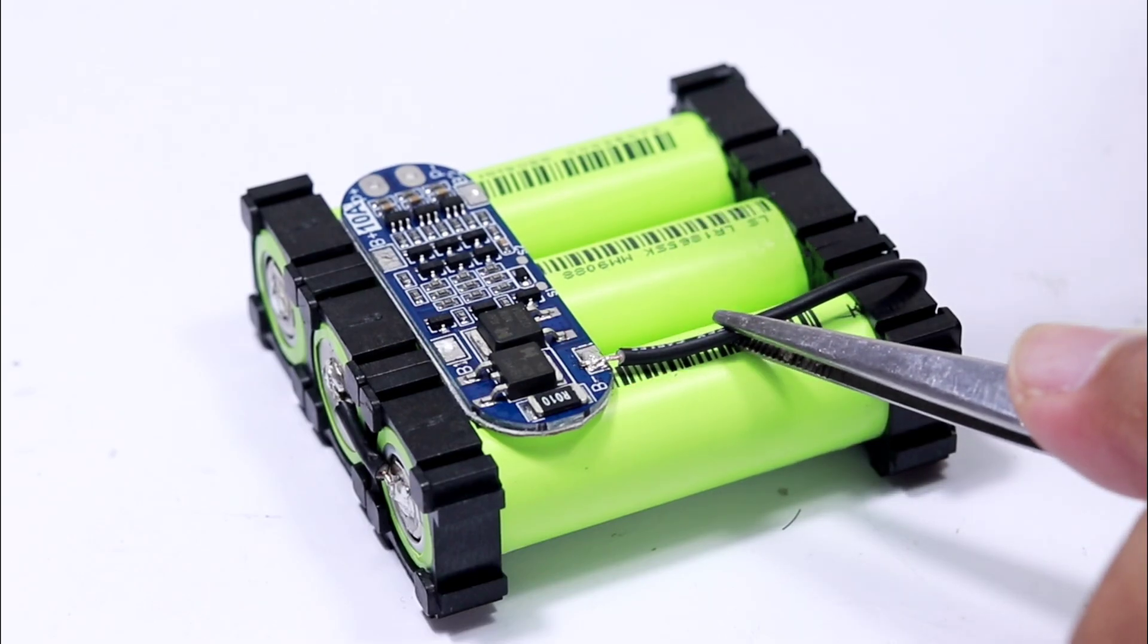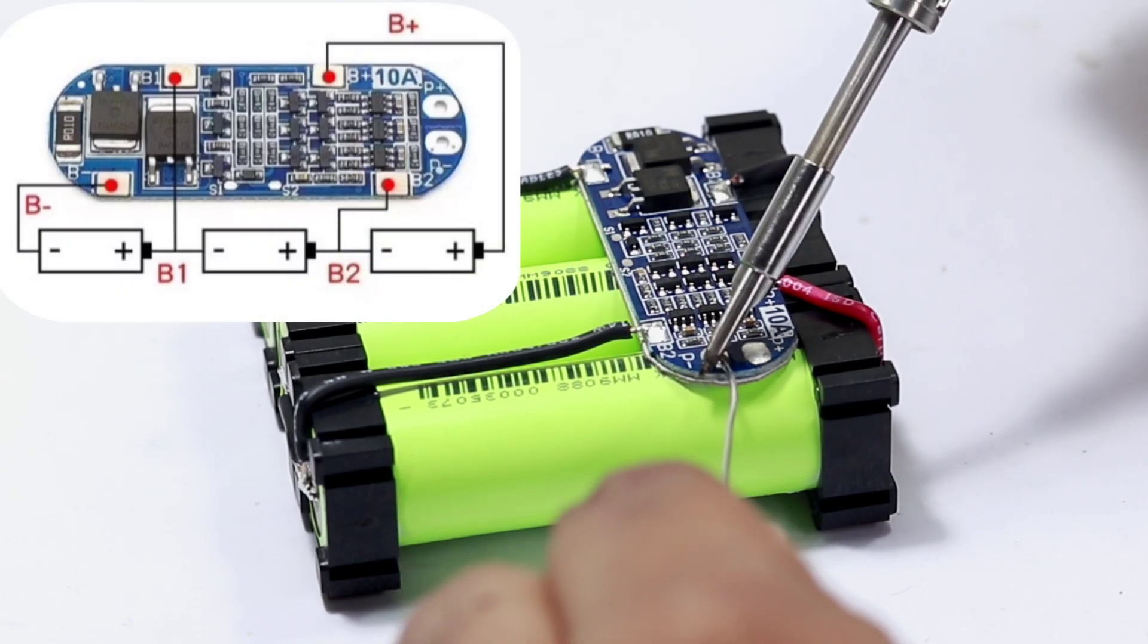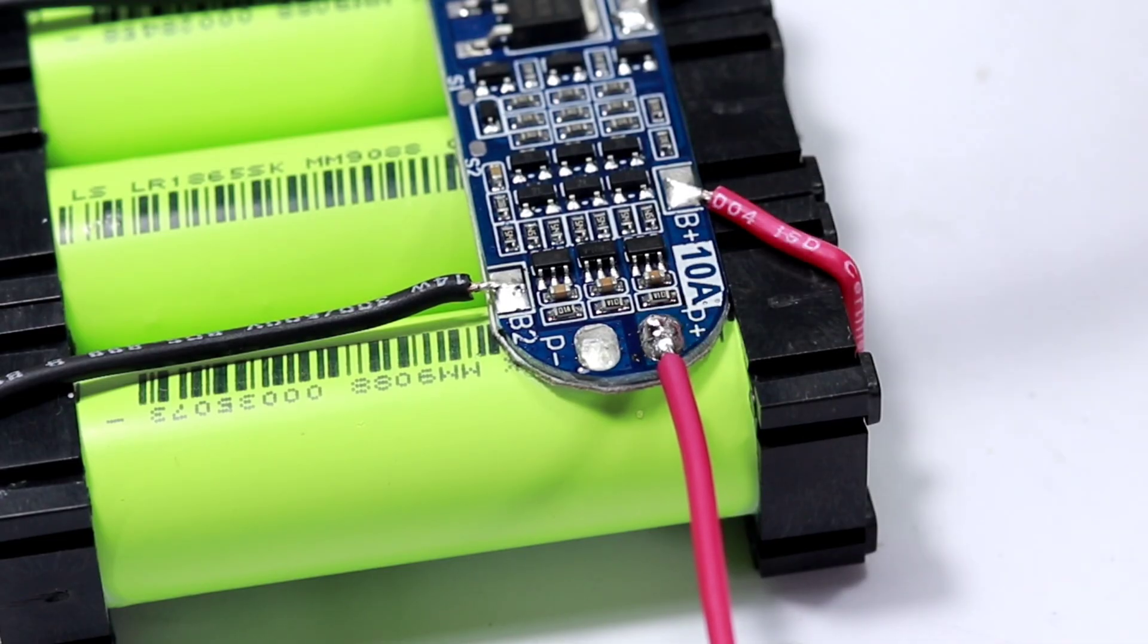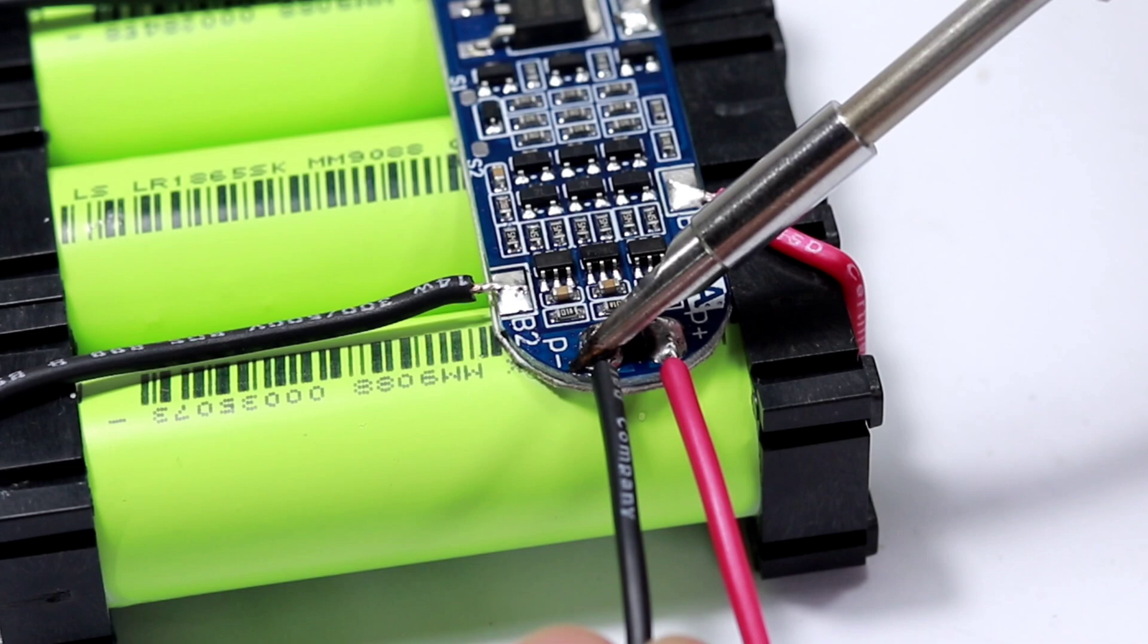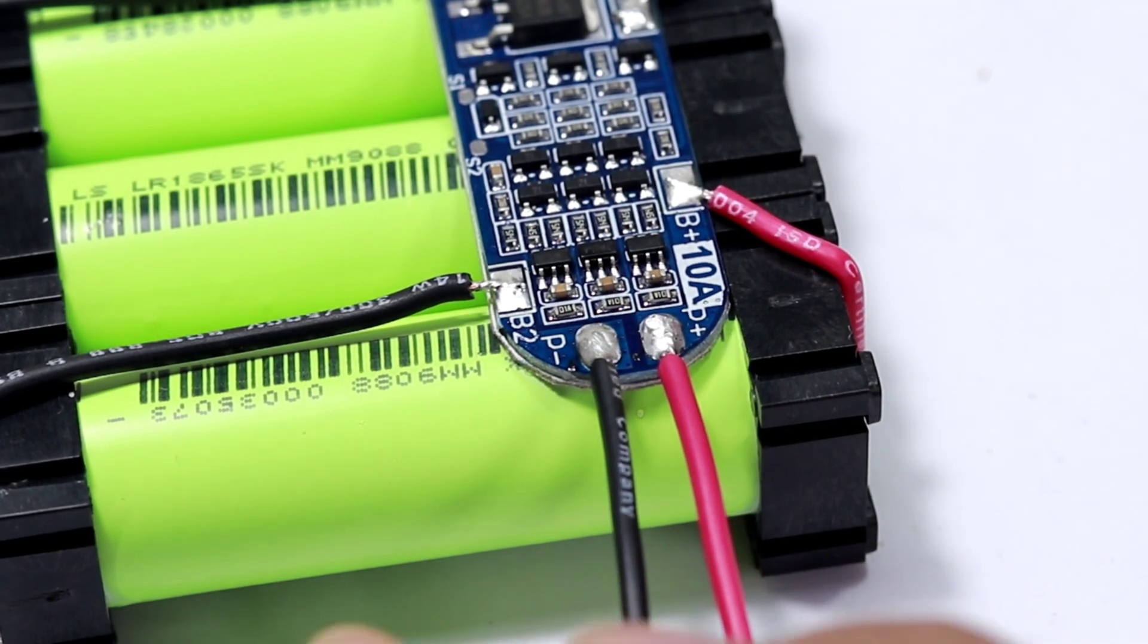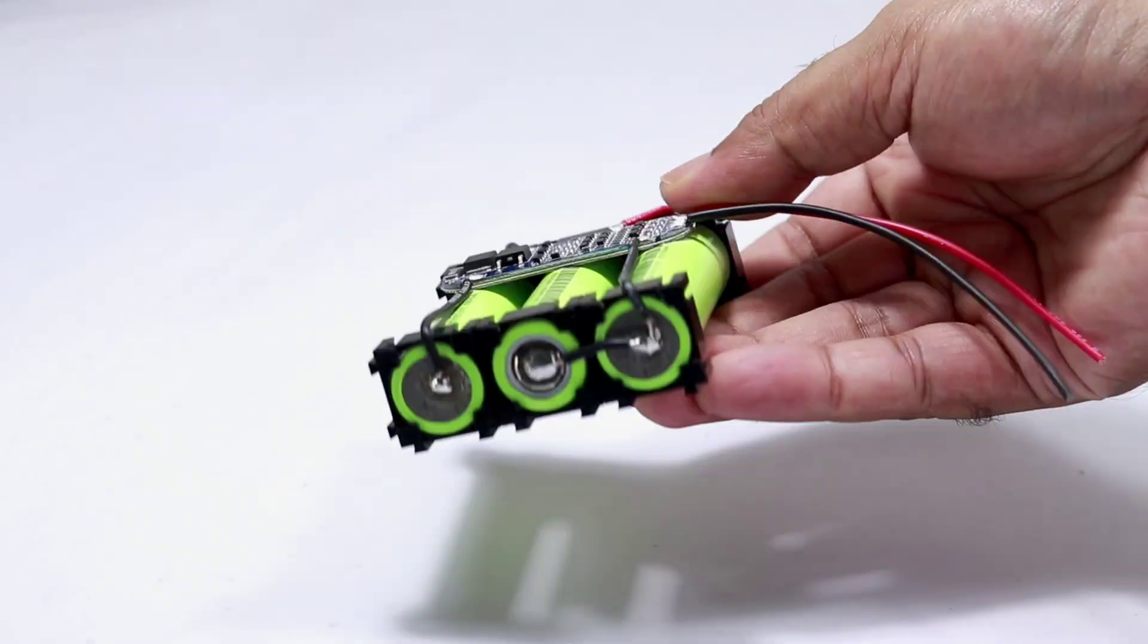I'll connect the BMS module according to the diagram and solder two wires for the power terminal. Finally the battery pack is ready.